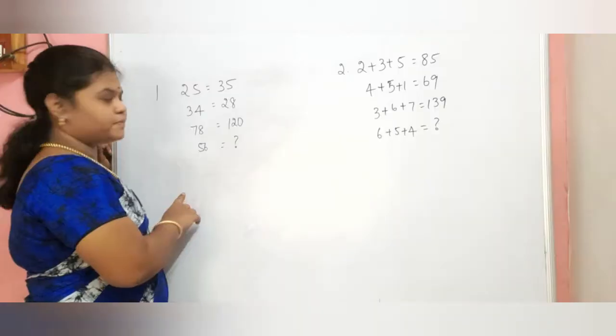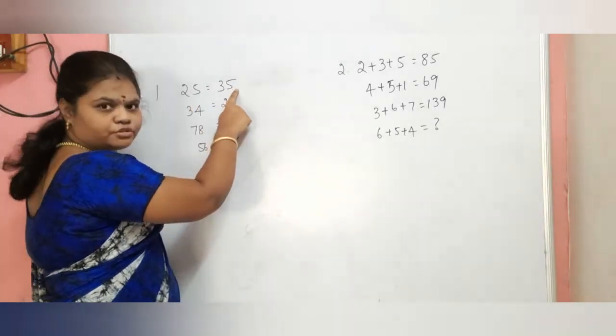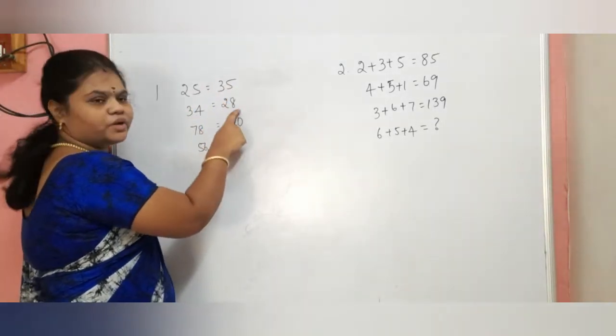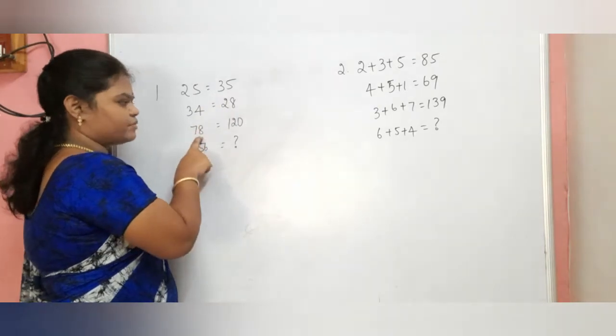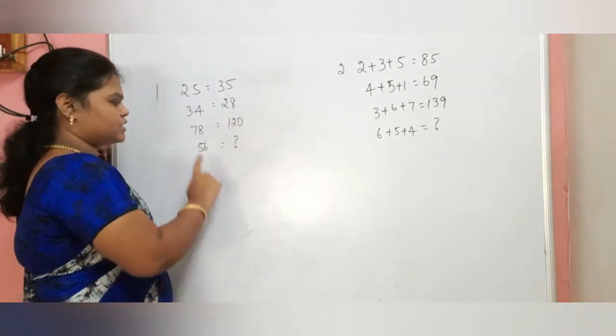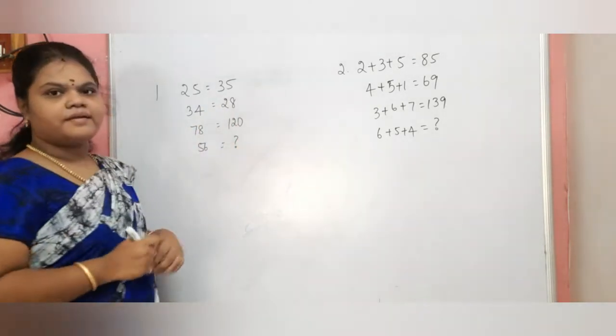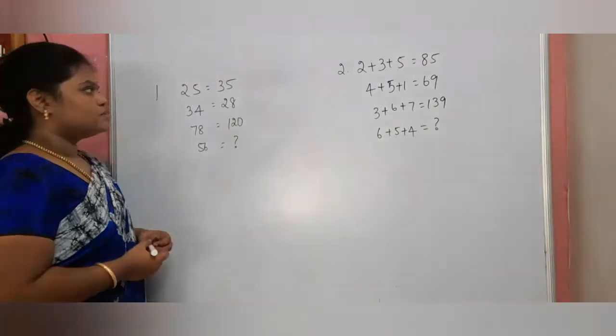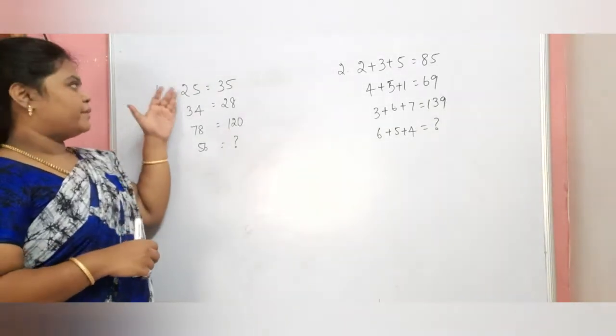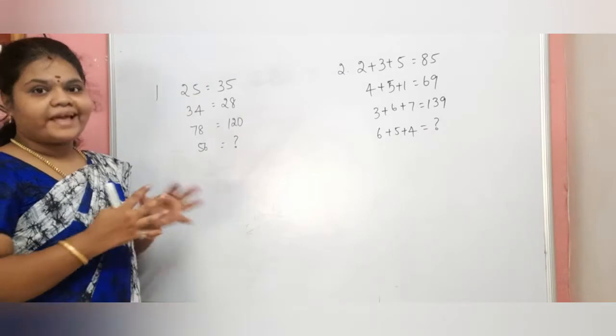First puzzle: 25 equal to 35, 34 equal to 28, 78 equal to 120, 56 equal to question mark. First, we will tell you about the logic.